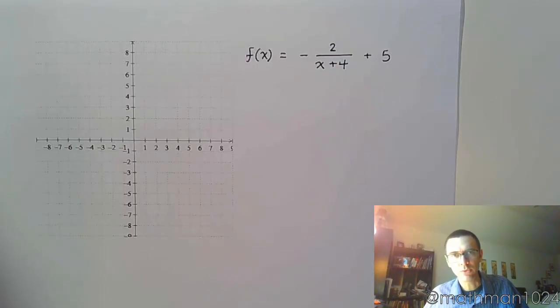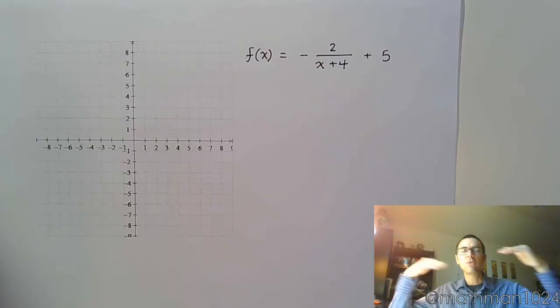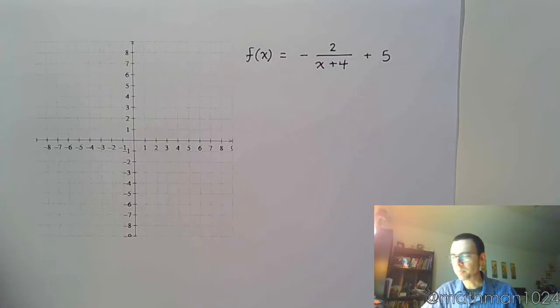Alright, here is our last example from this section. f(x) equals negative 2 divided by the quantity x plus 4, plus 5. So first of all, we recognize that what we have here is a rational function, which means it's going to be either the missed high 5 or it's going to be the volcano. So we don't see the square, so it's not the volcano, it's going to be the missed high 5.